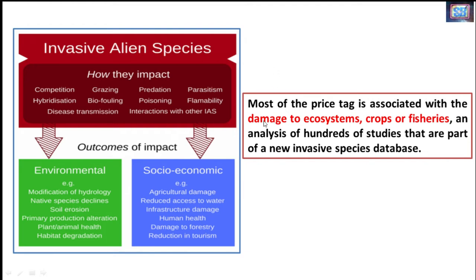Most of this cost caused by invasive alien species to the global economy can be attributed to damage to ecosystems, damage to crops, fisheries, and natural habitats. These invasive alien species compete with local species for food and other nutrition sources — they compete for grazing and predation. Sometimes these invasive alien species are also carriers of new diseases or new pathogens, and in that way they affect the local native species.